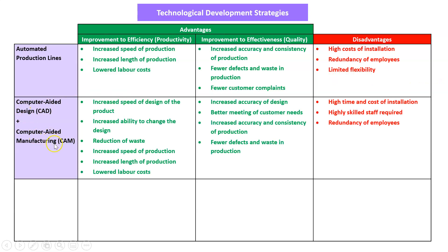Computer-aided design and computer-aided manufacturing are grouped together because they go together. You can design products faster, change them more easily, and reduce waste through exact precise measurements. Just like automation, you can run production faster and for longer and you'll need less labor — all improvements to efficiency. In terms of effectiveness, you get a more accurate product design that better meets customer needs; customers can feed their specific requirements into the computer, and production becomes more accurate and consistent with fewer defects. Disadvantages: high time and cost to install, and these require highly skilled people to use the programs, and again it may result in redundancies.